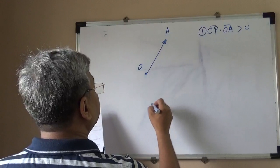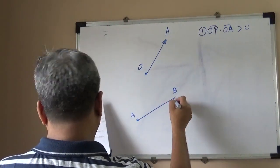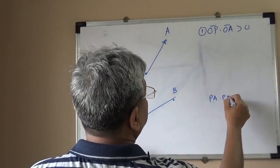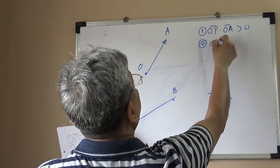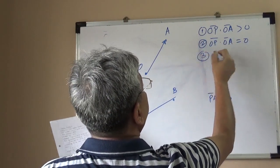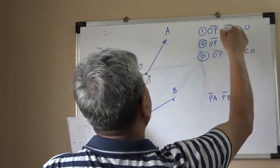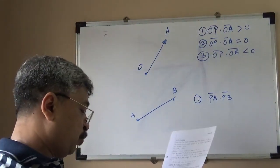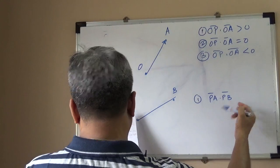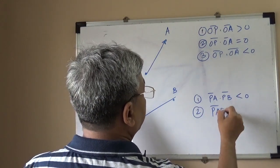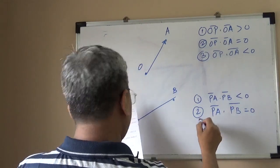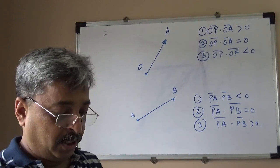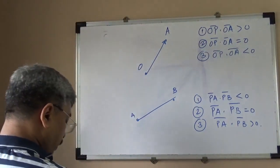The next question: given two points A and B, find the locus of point P such that PA·PB is less than 0, PA·PB equals 0, and PA·PB is greater than 0. A and B are given, and P is the moving point. Spend a good amount of time developing your understanding of these different loci — it will help you eventually.